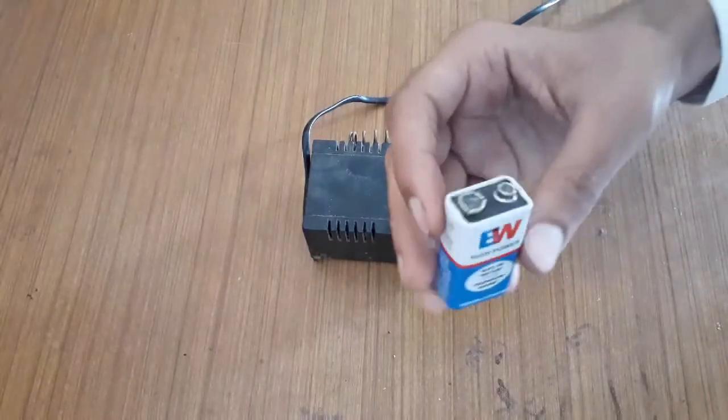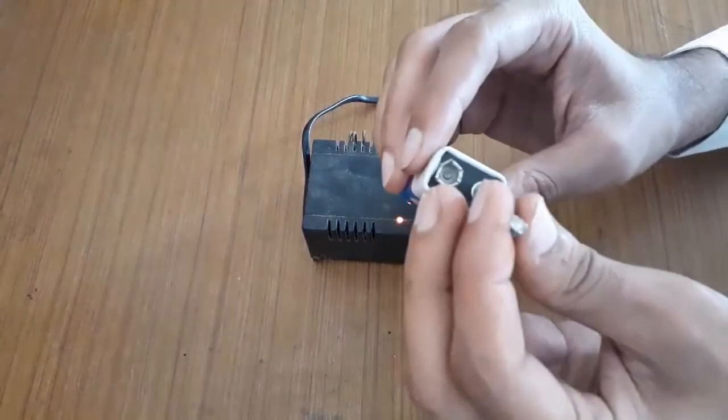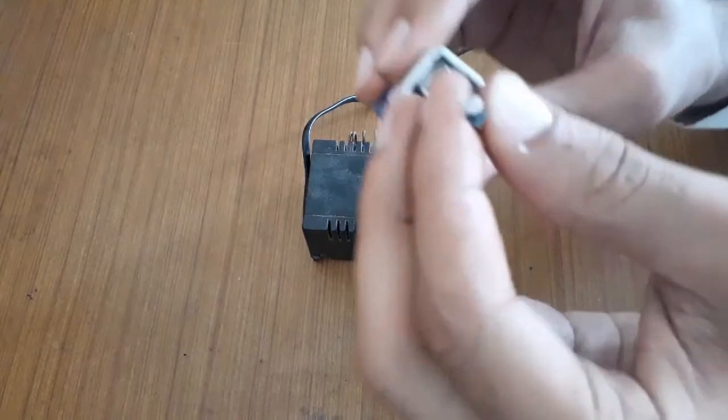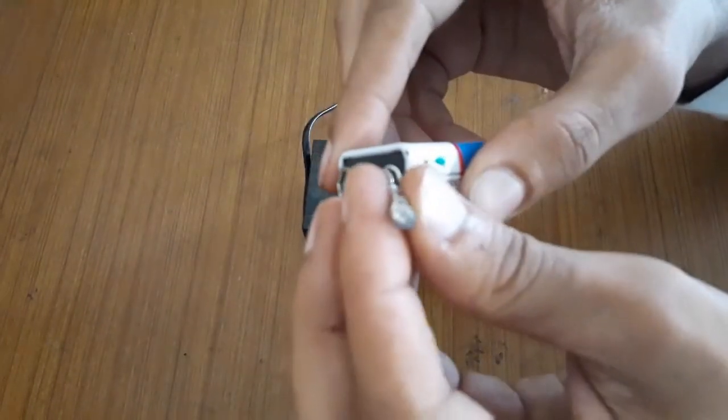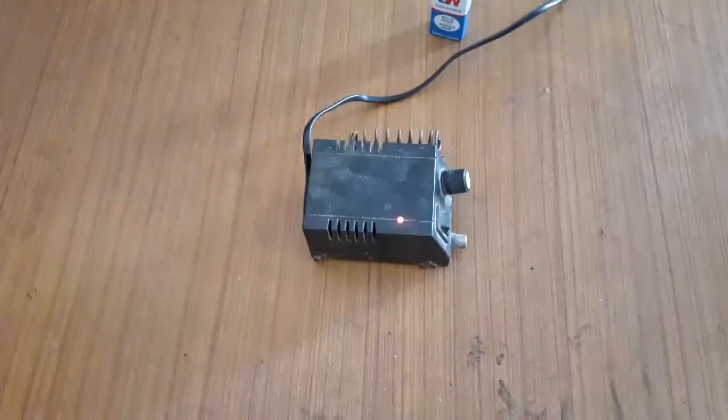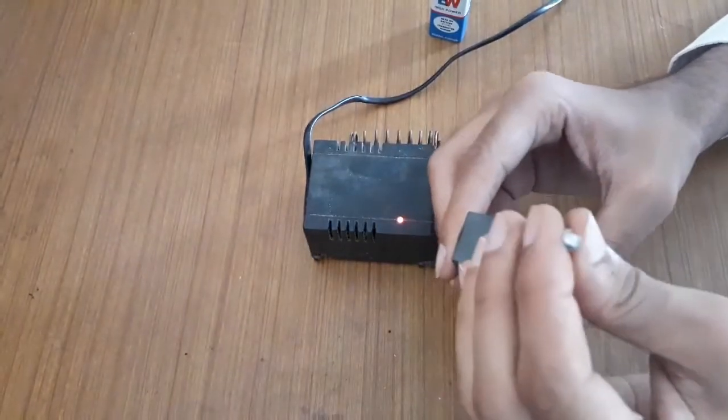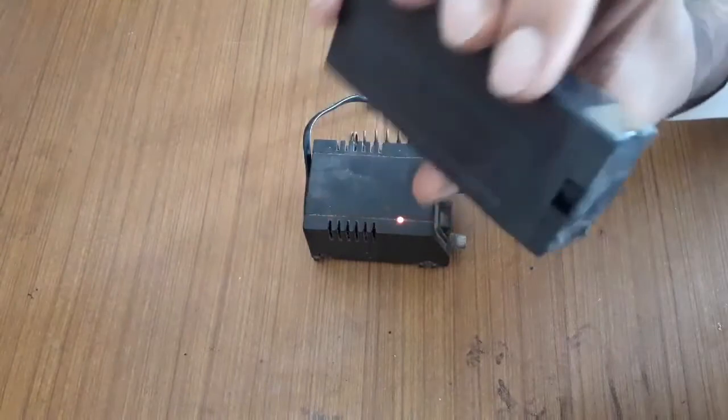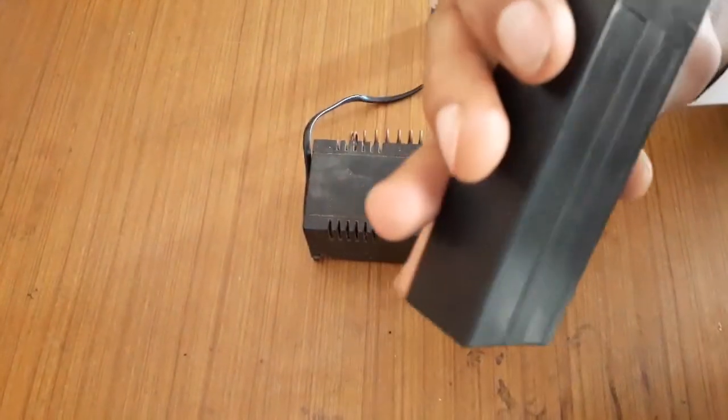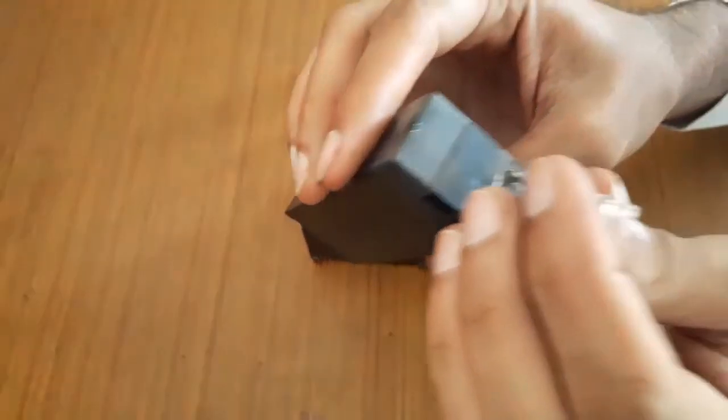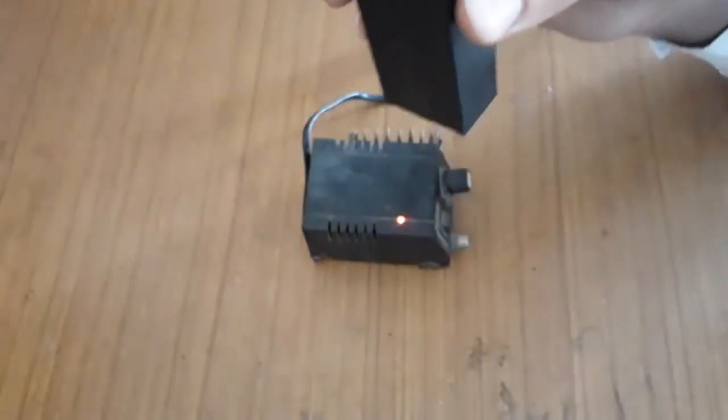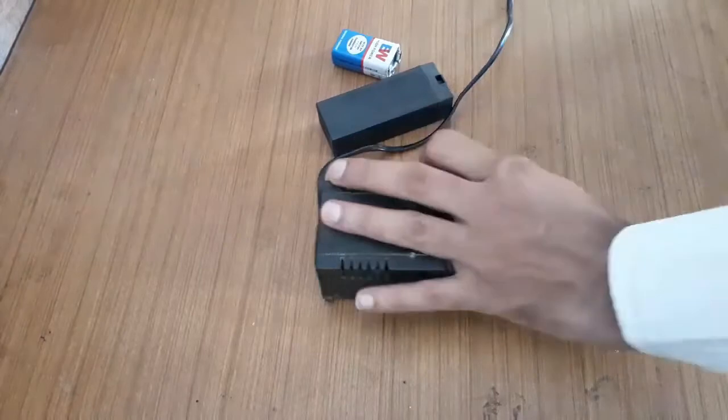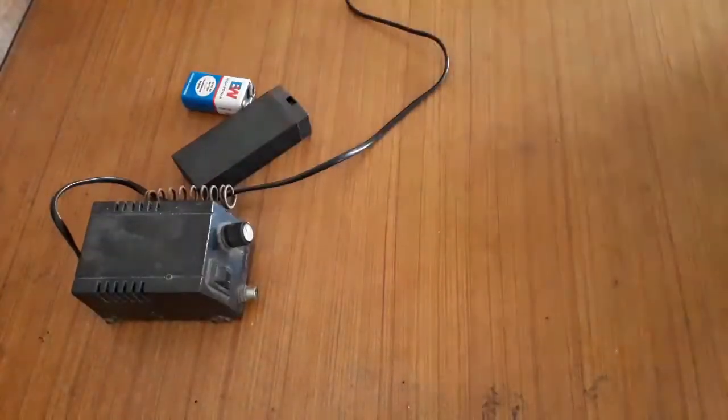We are going to test this 9 volt battery. It must be on positive terminal. Here it doesn't glow because this battery is discharged. Now with this low charged 4 volt battery, no, it doesn't glow here. To work, this tester needs sufficient voltage and current.